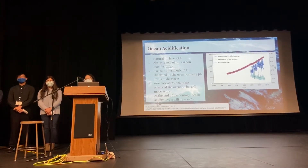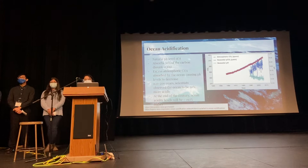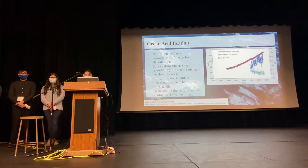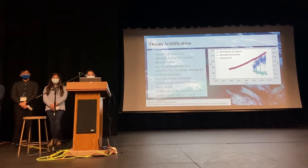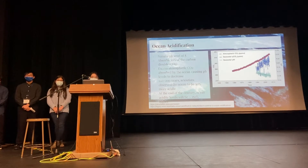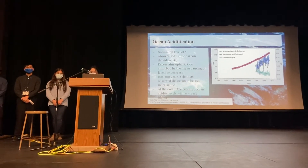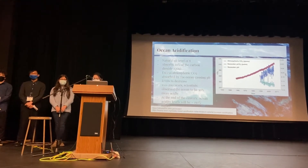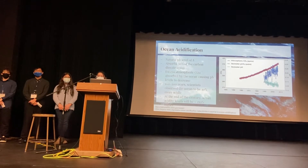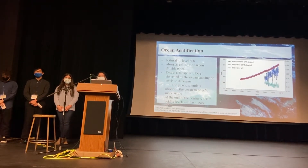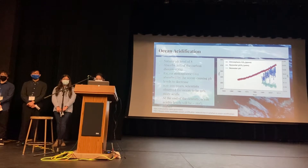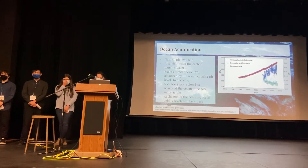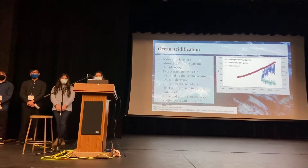Ocean acidification is an excessive amount of carbon dioxide, also known as CO2, in the atmosphere. The ocean has a natural pH level of 8, and usually absorbs about 30% of the CO2 in the atmosphere. With elevation of atmospheric and oceanic CO2, this can lead to a decline of seawater pH levels. For over 100 to 200 years, scientists have observed the ocean has increased 30% in acidity level, and they predict that by the end of the century the ocean will be 150% more acidic than it is right now.